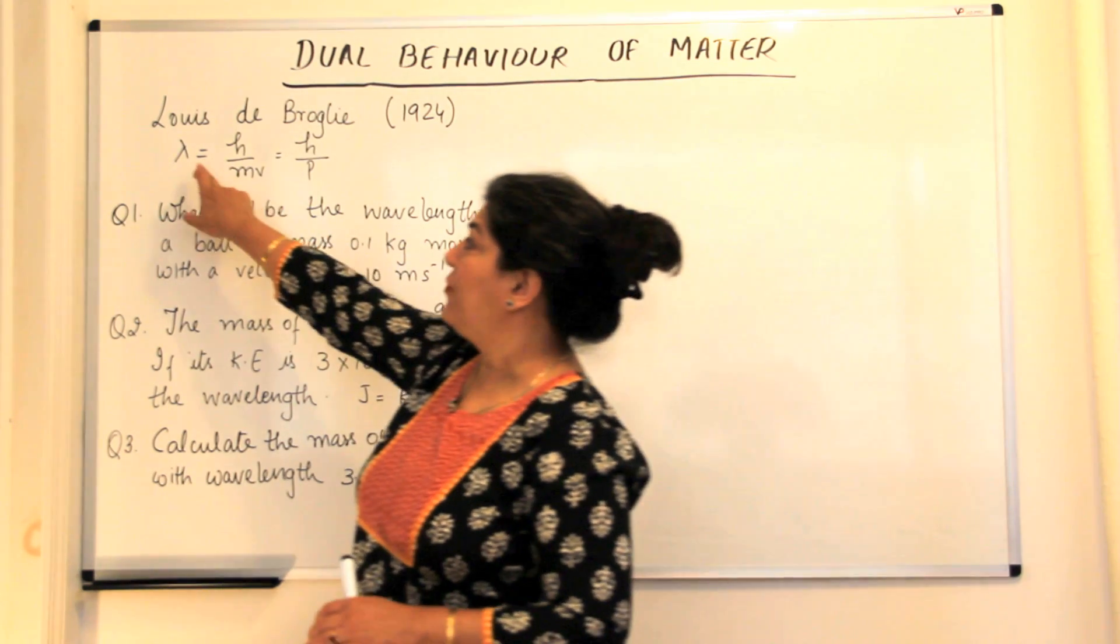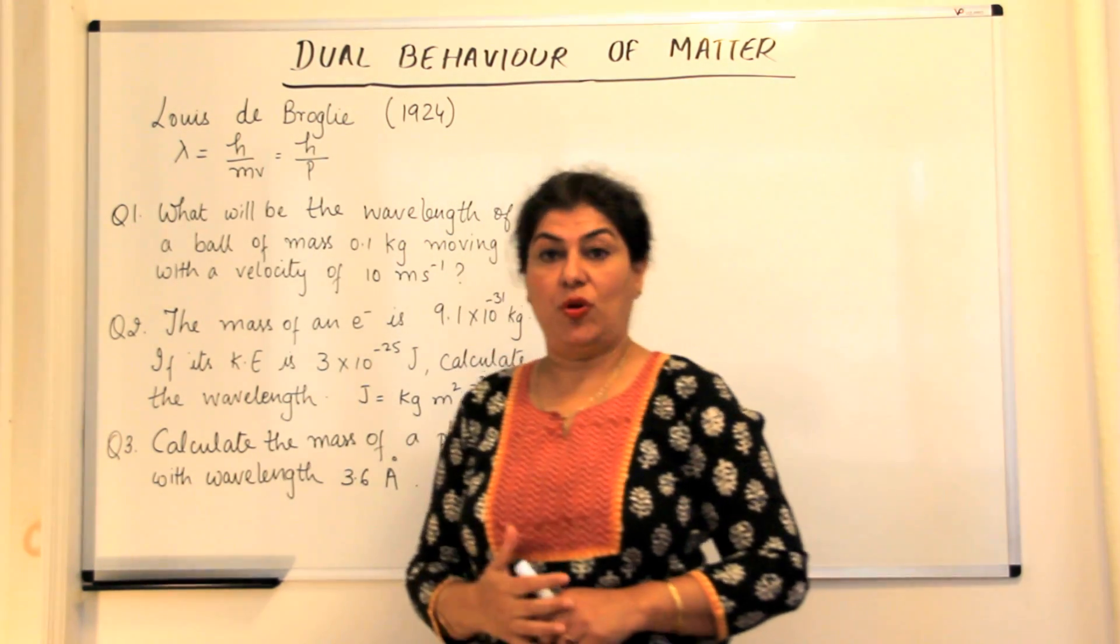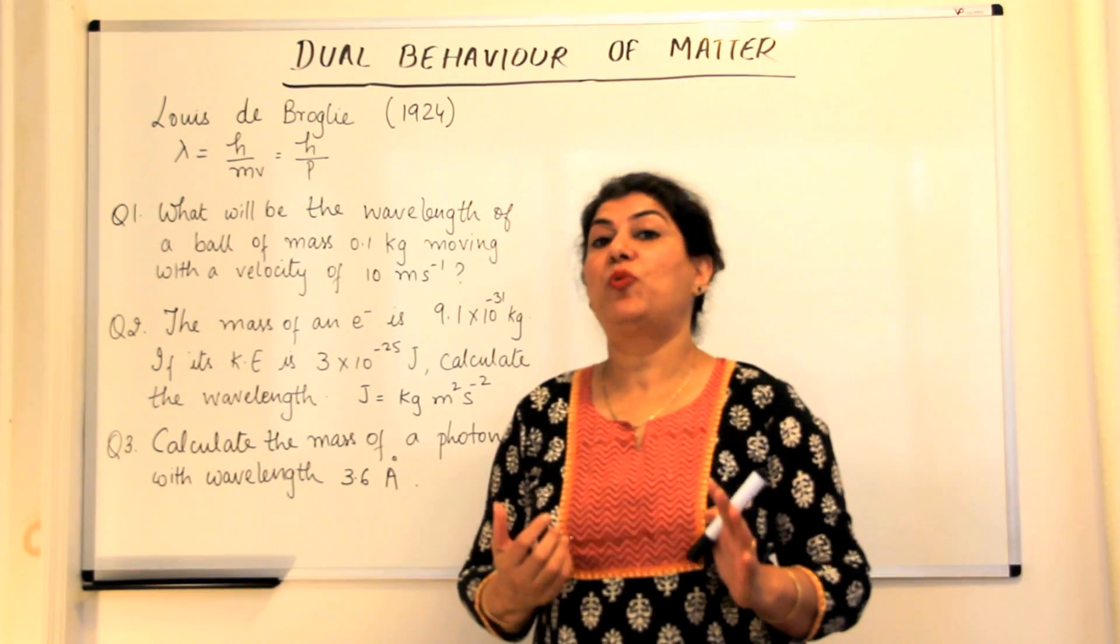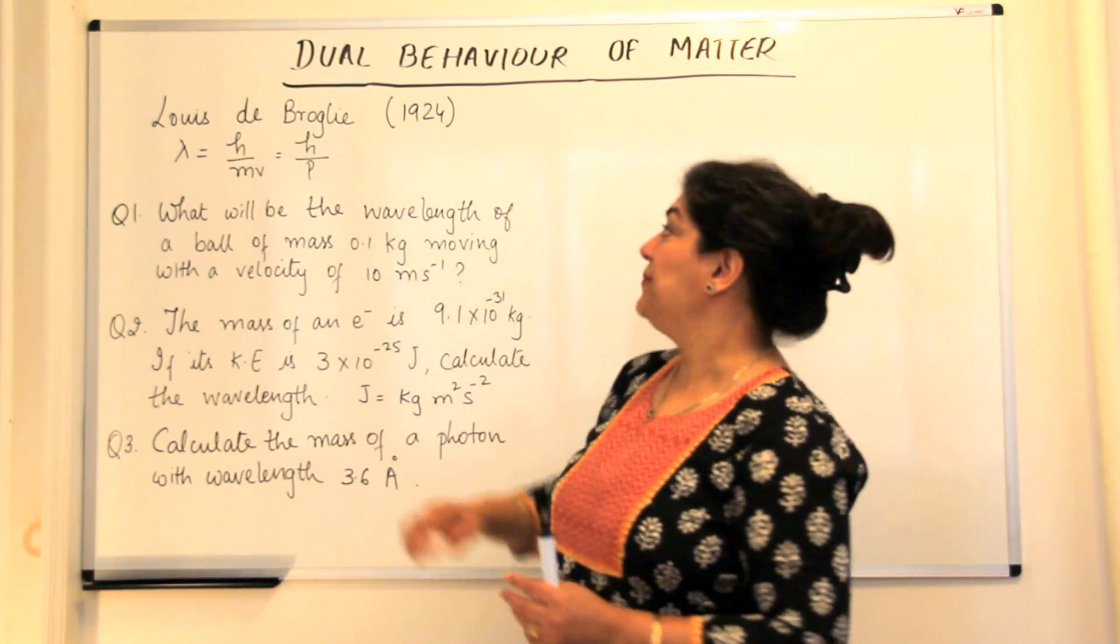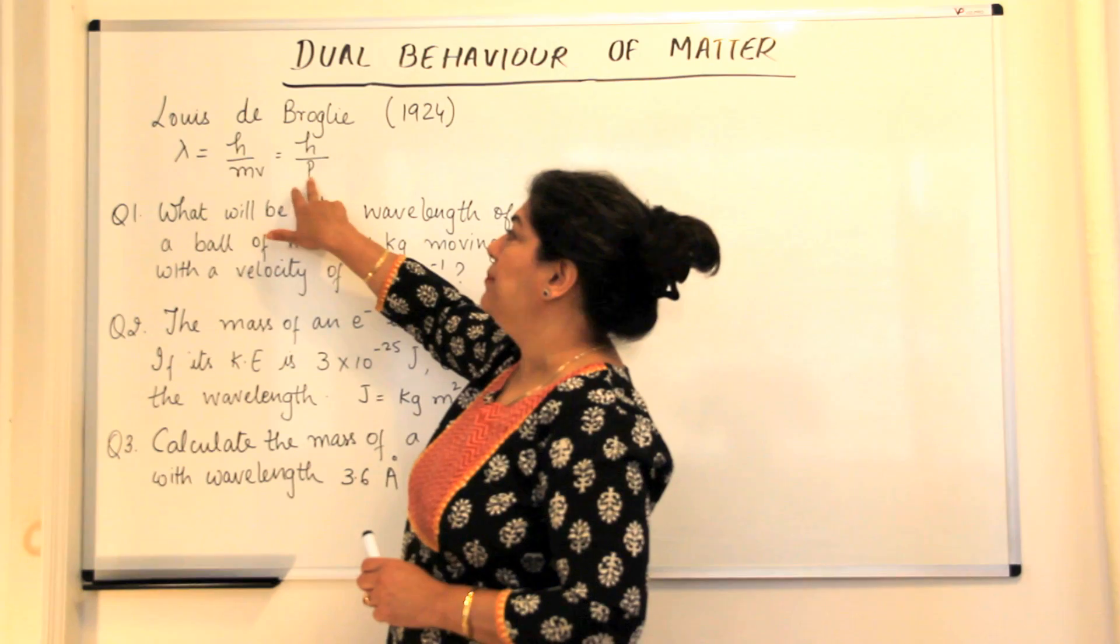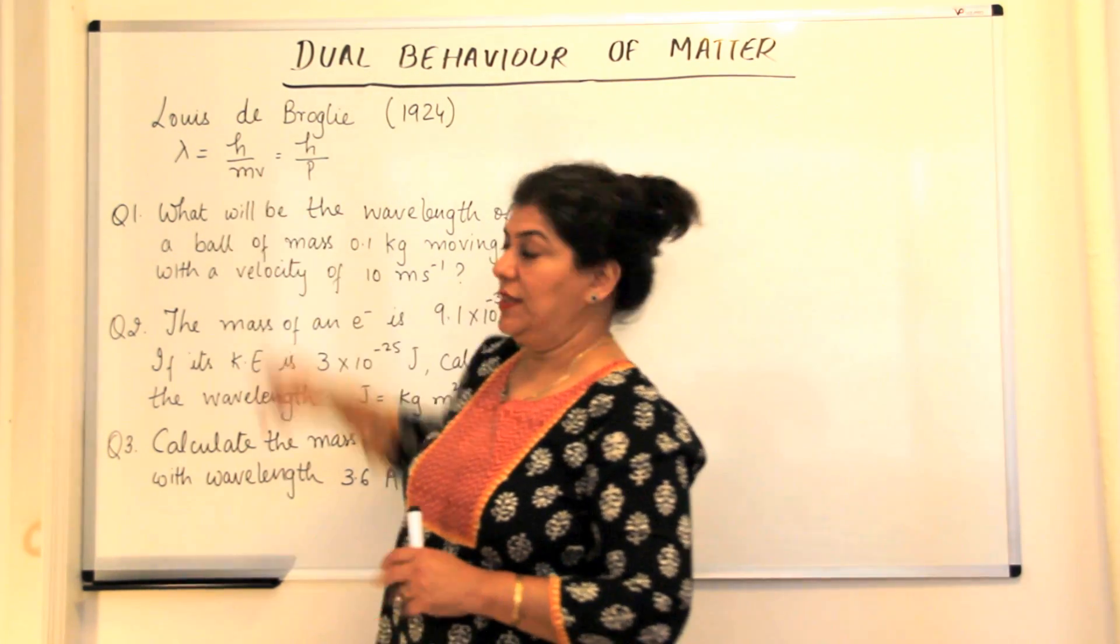Where lambda is the wavelength, H is the Planck's constant whose value is 6.626 into 10 to the power minus 34 joules second, and the momentum p is equal to the mass into the velocity.